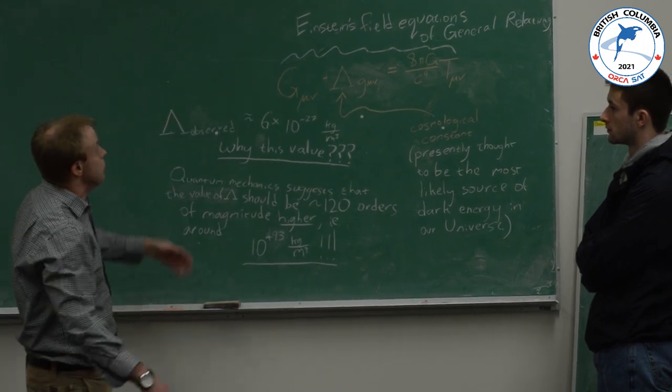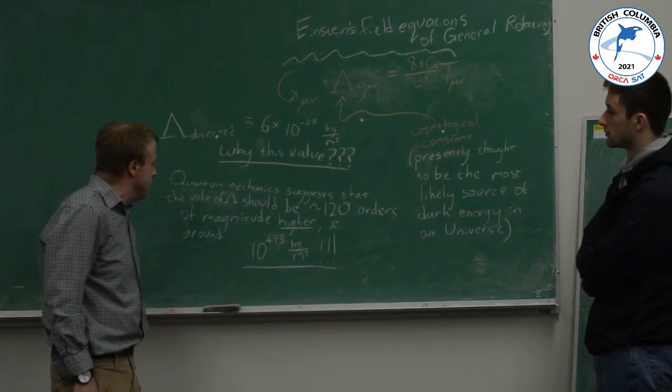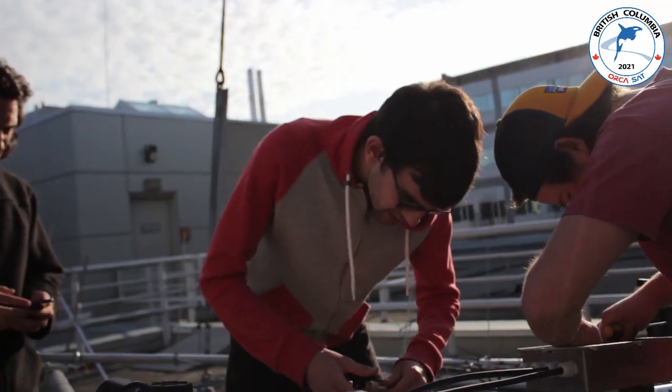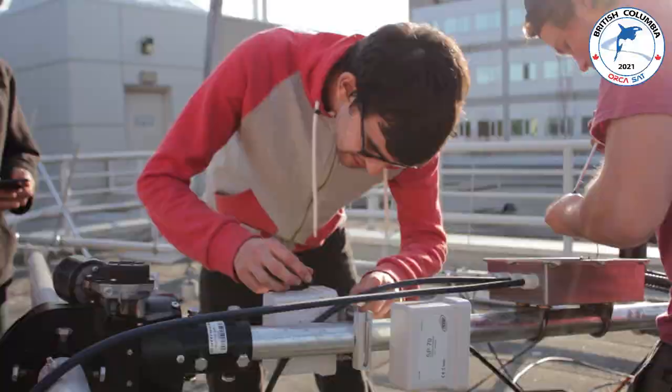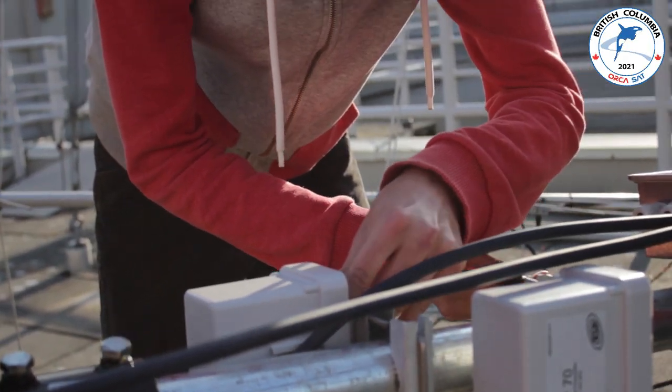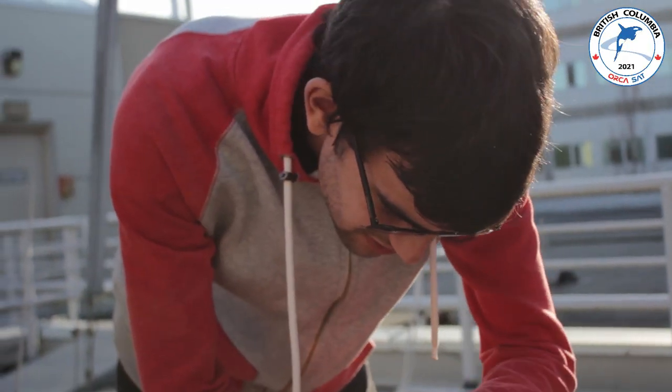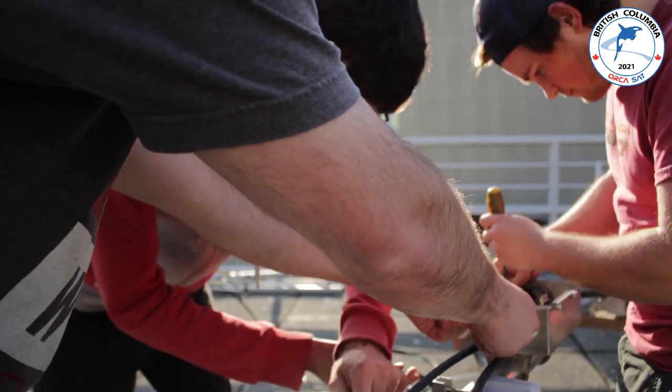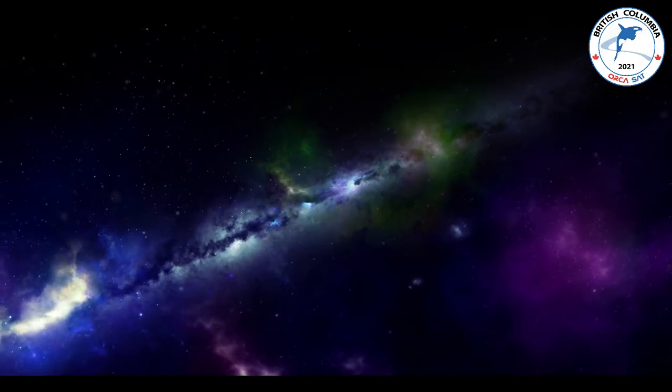Professor Justin Albert, ORCASAT co-principal investigator and professor of physics and astronomy at the University of Victoria, claims that our measurements of the universal expansion rate are fundamentally limited by two sources of systematic uncertainties: atmospheric and instrumental interference.